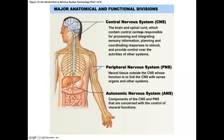The brain is responsible for countless processes. It's integrating information coming in from your body — the sensory information coming from your body — it's planning what to do, coordinating responses to the stimuli coming in, and provides control over lots and lots of systems in the body.